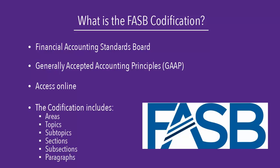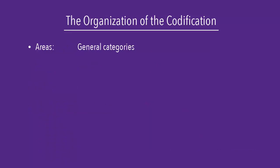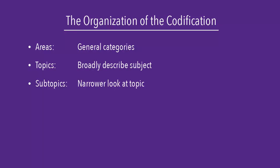The codification is organized by areas, topics, subtopics, sections, subsections, and paragraphs. Areas are general categories in which accounting principles are organized. Topics broadly describe the subject you are researching. Subtopics take a narrower look at the larger topic you selected. Sections are fairly uniform headings within subtopics and will include items such as scope, glossary, and initial measurement.